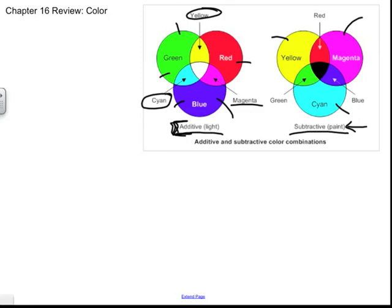So cyan, for example, removes the red. You can always look at what's opposite. So cyan is going to remove red. Yellow removes blue. And magenta removes green from whatever's going on. That's why it's subtractive. Keep straight that these get flipped a little bit.